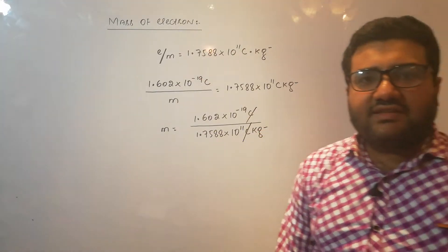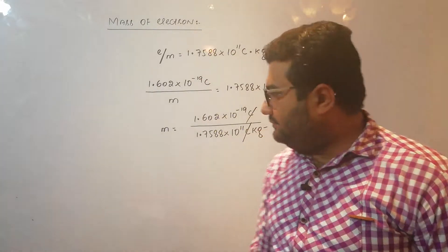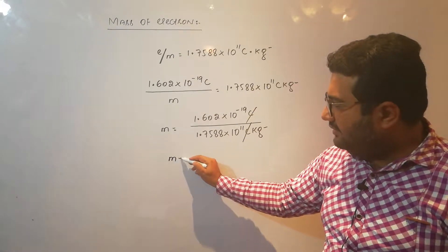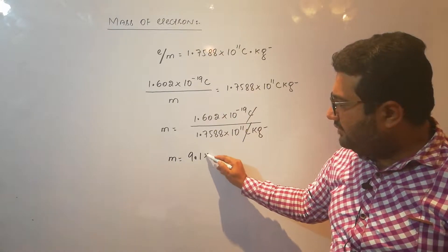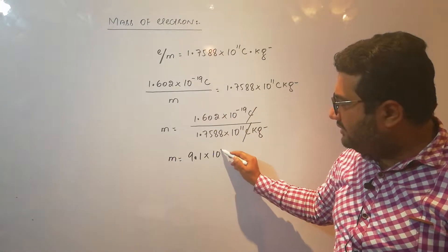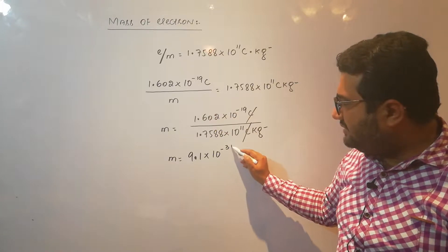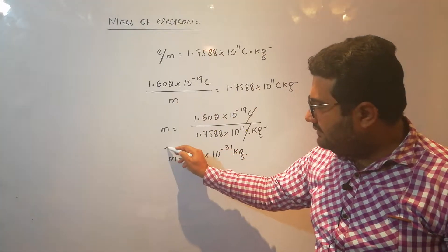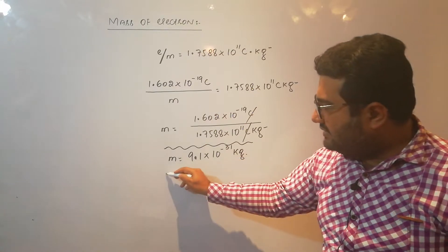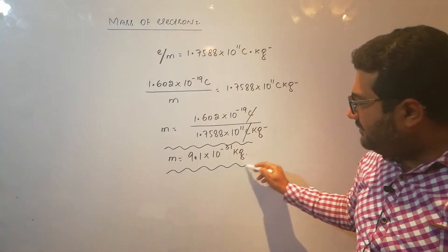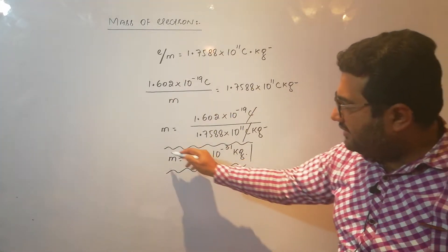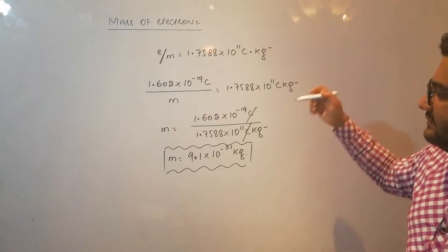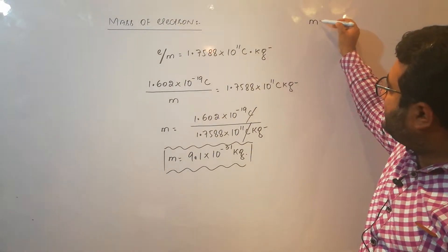The coulombs cancel with coulombs, and when you calculate it, it comes out to be 9.1 × 10⁻³¹ kg. This is the mass of electron in kg.